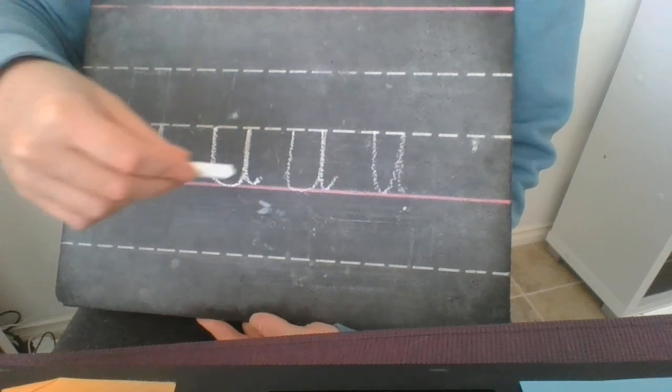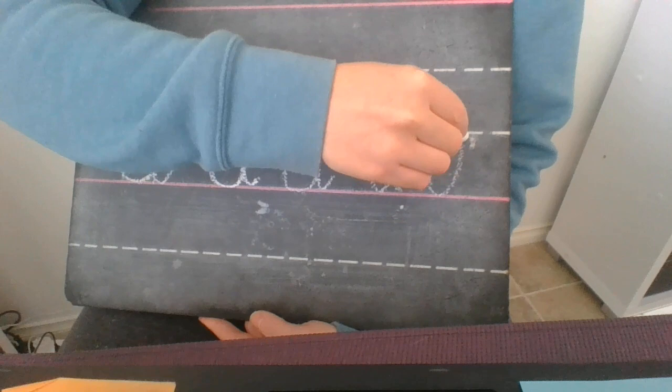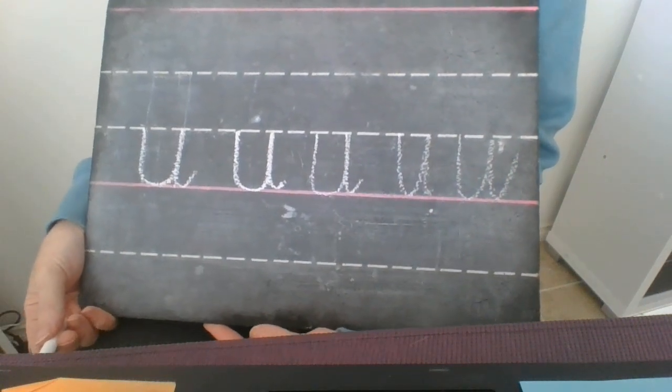Also, making sure that once again, that exit point, that kick, is just a little kick. It doesn't need to be a really big one, then it starts looking like a different type of letter.